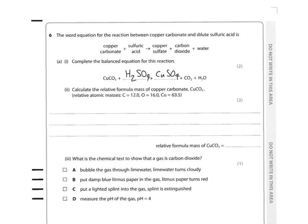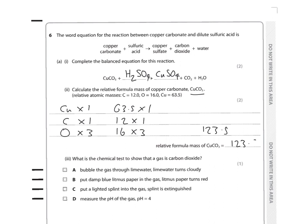Calculate the relative formula mass of copper carbonate, CuCO₃. Copper carbonate has one copper, one carbon, and three oxygens. Each has a mass: copper is 63.5 × 1, carbon is 12 × 1, and oxygen is 16 × 3. Adding those together gives a relative formula mass of 123.5.